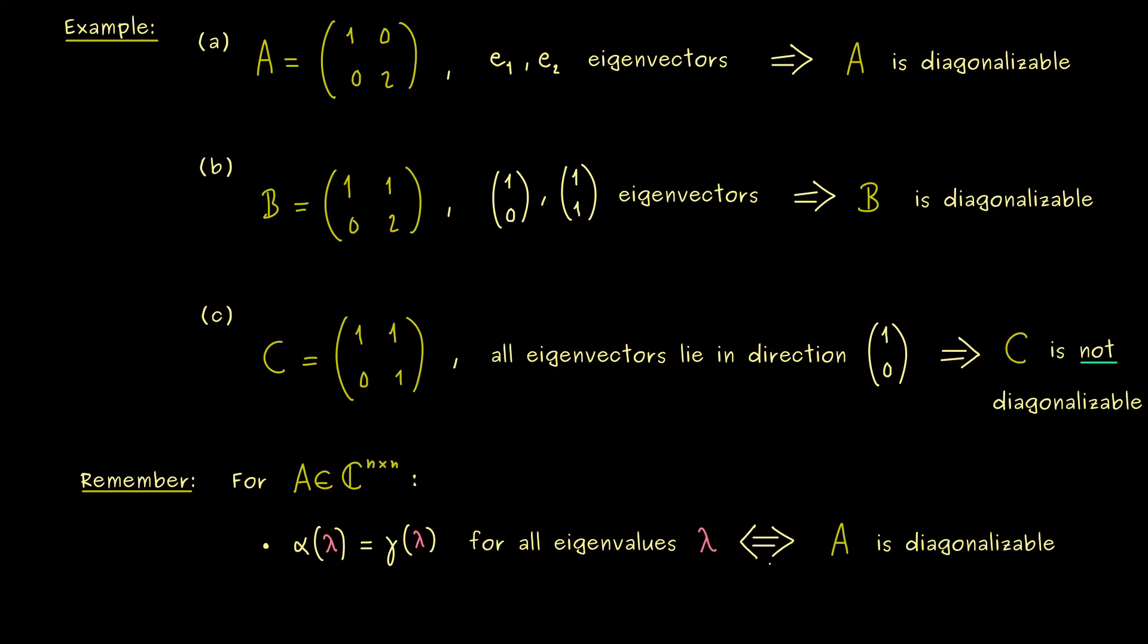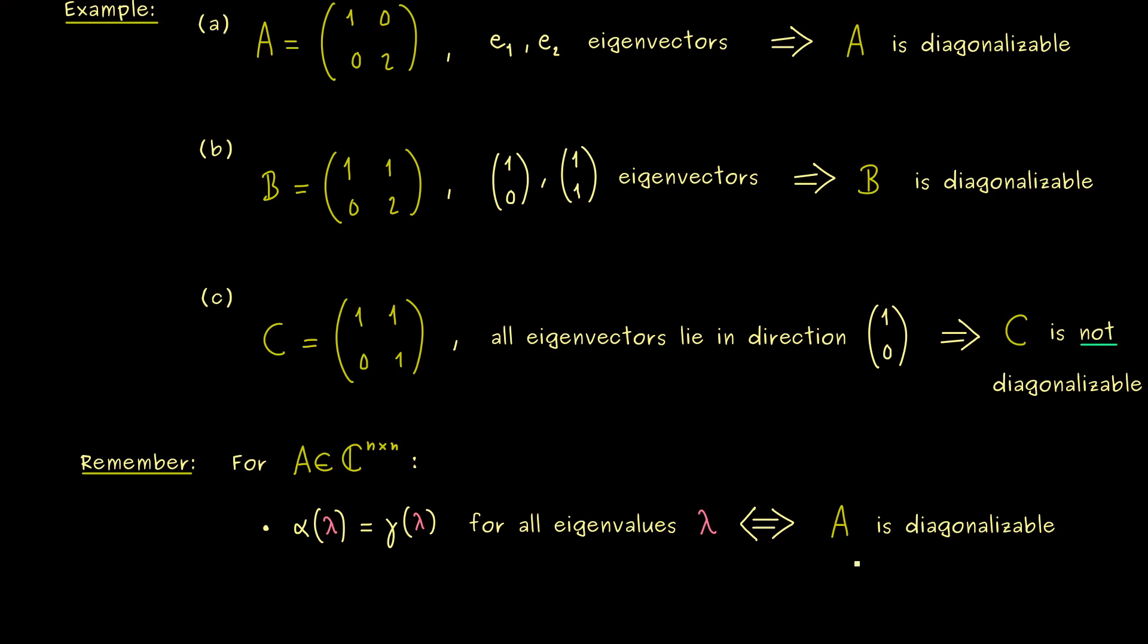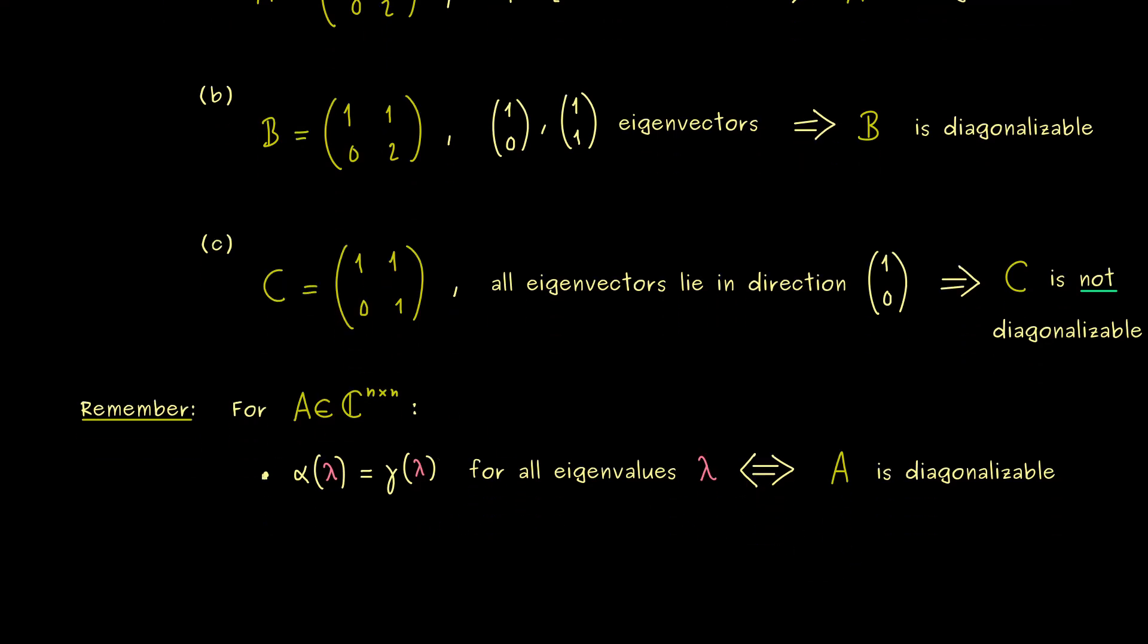Moreover, it also works the other way around. A diagonalizable matrix needs enough eigenvectors. And this means the geometric multiplicities have to be equal to the algebraic multiplicities. Indeed, this comes immediately out from our definition of A being diagonalizable and from the definition of the multiplicities.